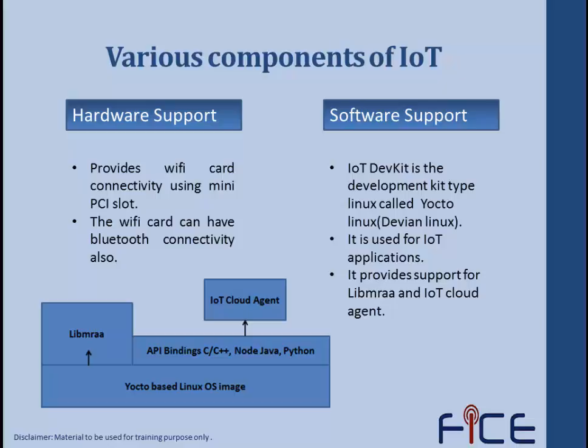For software support, IoT devkit is the development kit commonly known as Yocto Linux or Davian Linux. It is used for various IoT applications and provides various library supports. Two famous library supports are libmraa and IoT cloud agent. With a Yocto-based Linux OS image, we can access various libraries — libmraa and IoT cloud agent — along with API bindings for C, C++, Java, and Python.